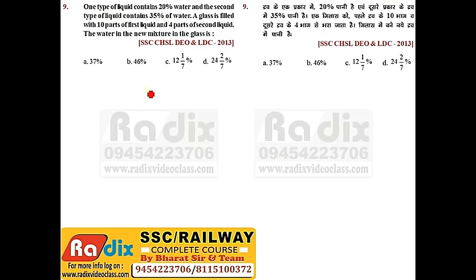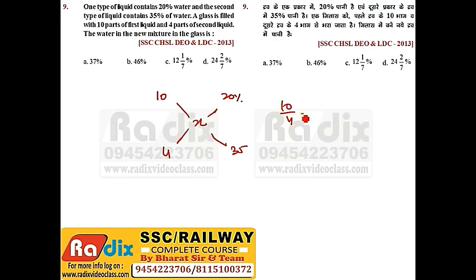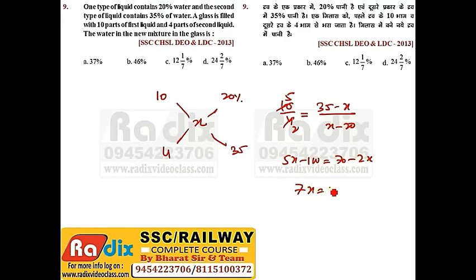Next question. One type of liquid contains 20% water and a second type contains 35% water. A glass is filled with 10 parts of the 1st liquid and 4 parts of the 2nd liquid. Find the water percentage in the new mixture. Using allegation: 10/4 = (35 − x) / (x − 20). So 5x − 100 = 70 − 2x, giving 7x = 170, x = 170/7 ≈ 24 and 2/7 percent. Answer is option D.